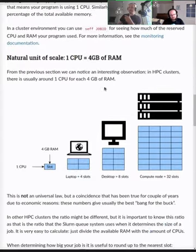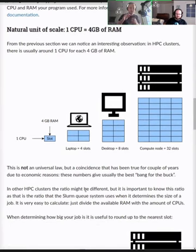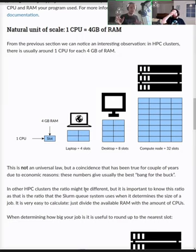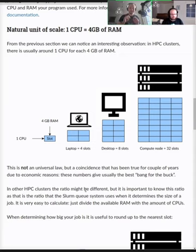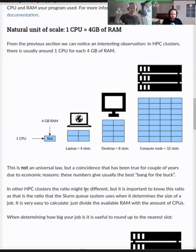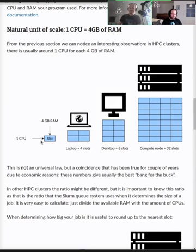Now that we've talked about RAM and CPU, let's talk about how to think of them when going to the cluster. The cluster typically thinks of jobs in terms of 'slots.' If you have some amount of memory and some CPUs, the queue system thinks about what block of memory and CPU a job needs. Based on economic reasons — not a law of nature — the slot size is about one CPU per four gigabytes of RAM.